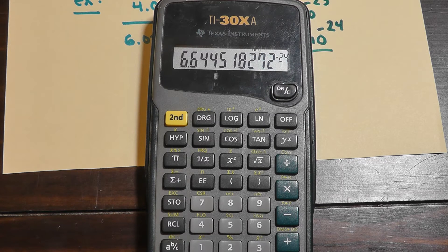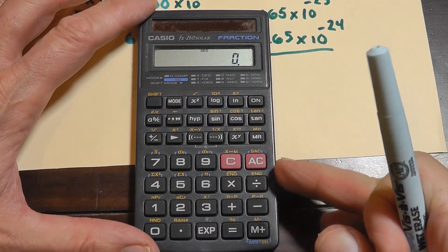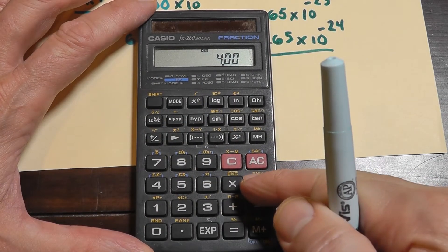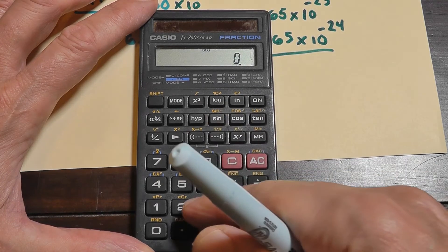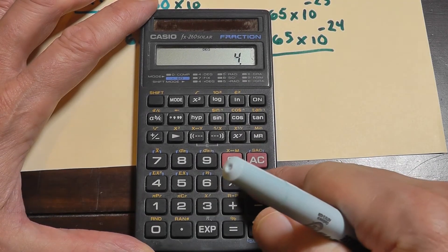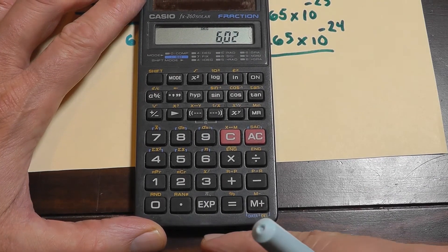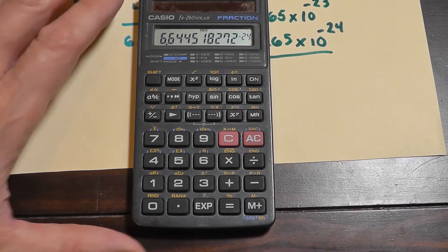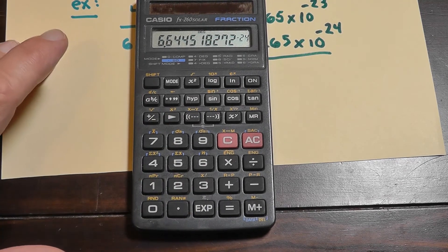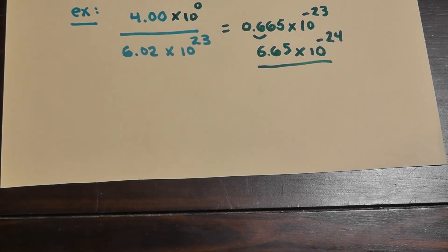On this particular calculator it doesn't show 'times 10 to the whatever,' and that gets students confused. Calculator number two is this Casio — another cheapo. You don't really need to spend a ton of money. 4.00 divided by 6.02, and here there's an EXP button. It also doesn't show 'times 10 to the whatever.' Hit the exponent, type 23, hit equals, and there's our answer. Here it's EXP; on the other one it was double-E. Every calculator is different — just do this along with me on your calculator.